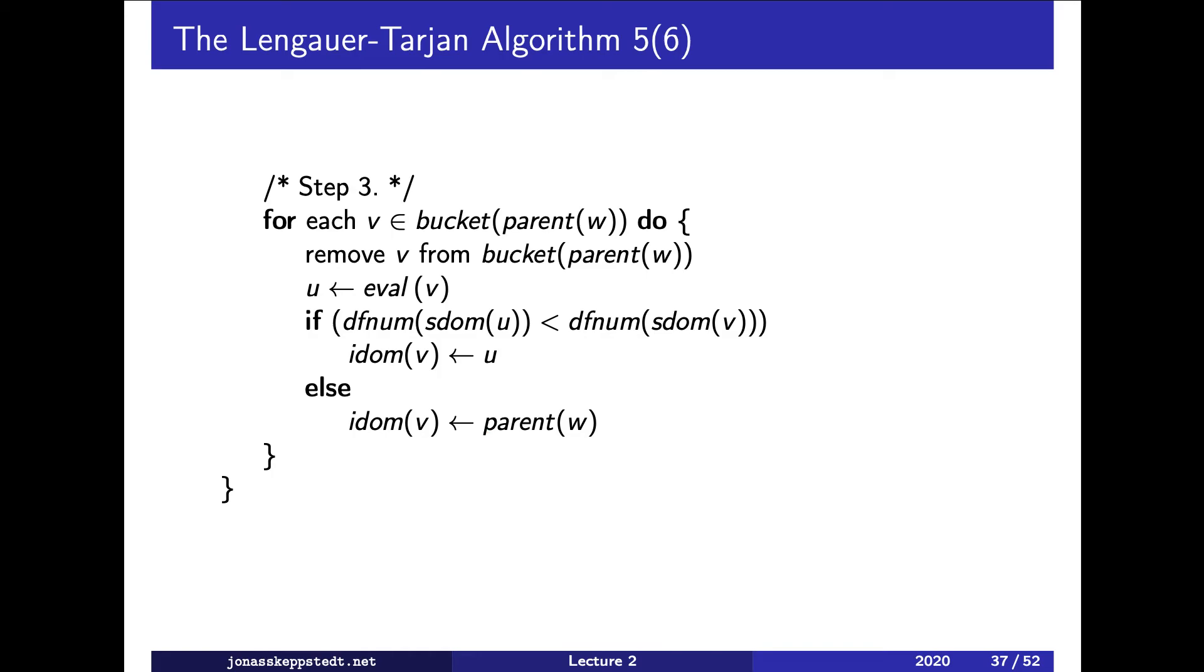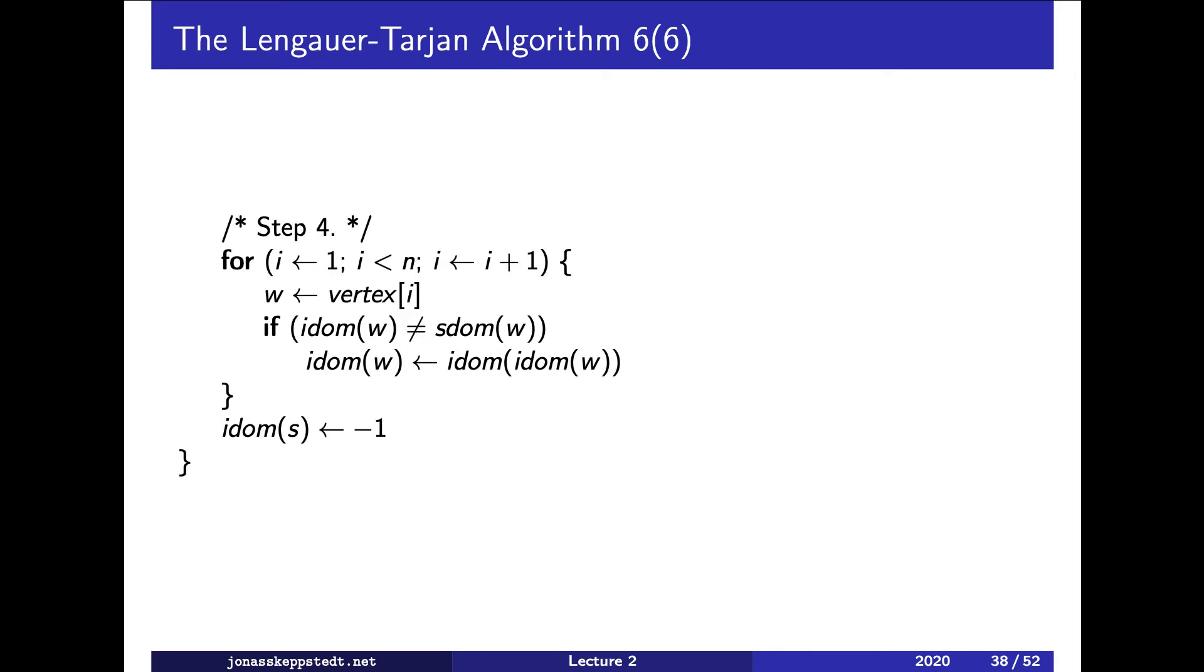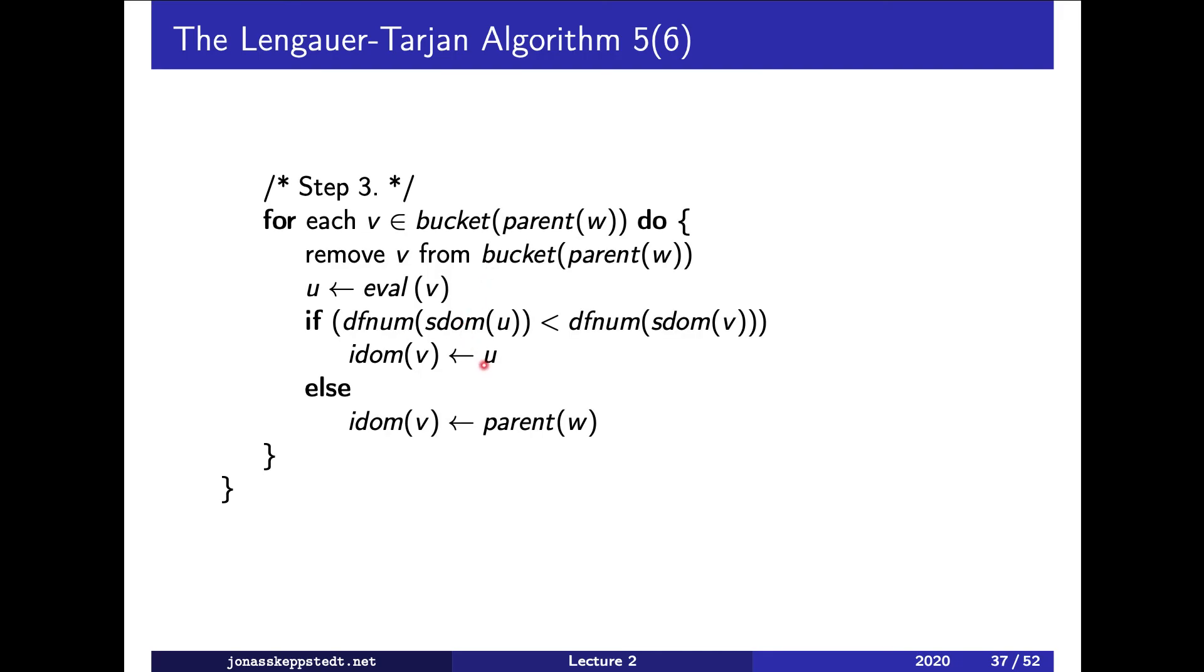Then we do one more iteration and check if the immediate dominator is different from the semi-dominator. If this then it was such a saved u.